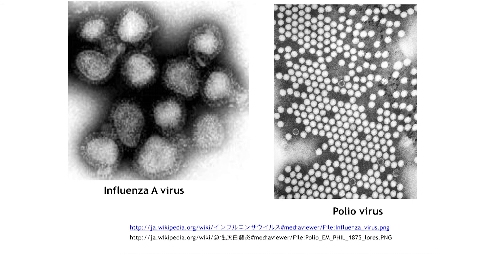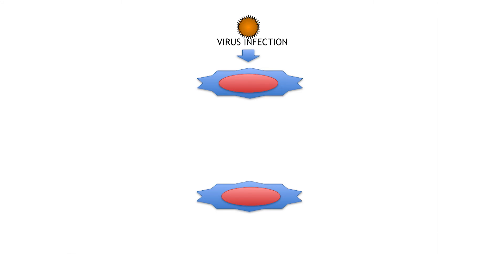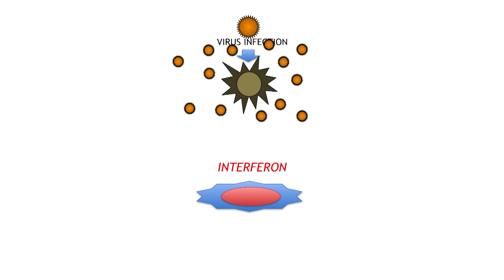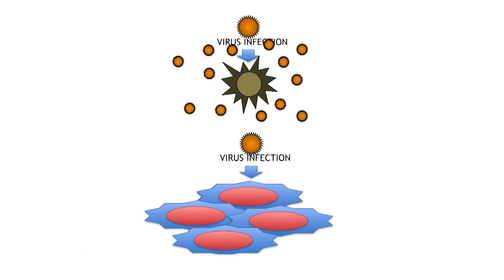How can we detect the replication of viruses? Viruses require host cells for their replication. When viruses infect cells, cell death is induced with simultaneous release of progeny viruses. However, if cells are pre-treated with a protein termed interferon and infected with viruses, viral replication is impaired and cells continue to replicate.